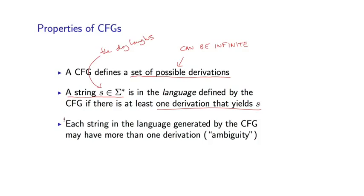Critically, a very interesting property is that some strings in the language may actually have more than one possible derivation, and this leads directly to the problem of ambiguity. Let me give you an example of this.